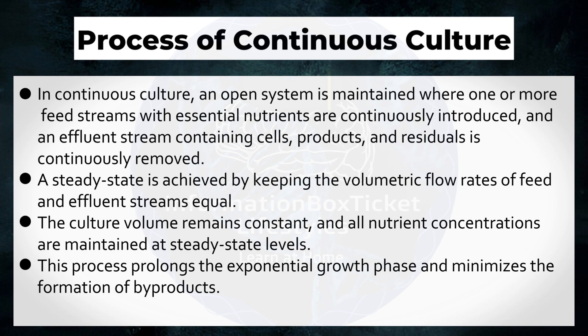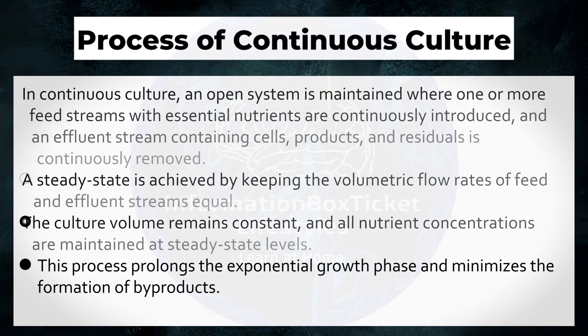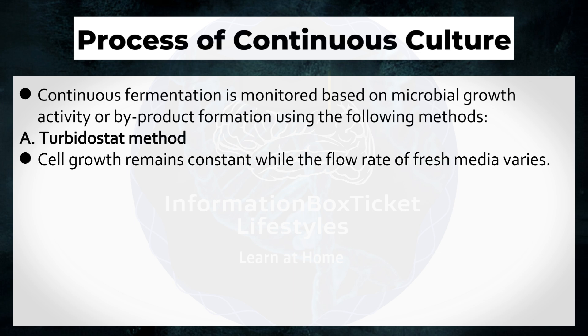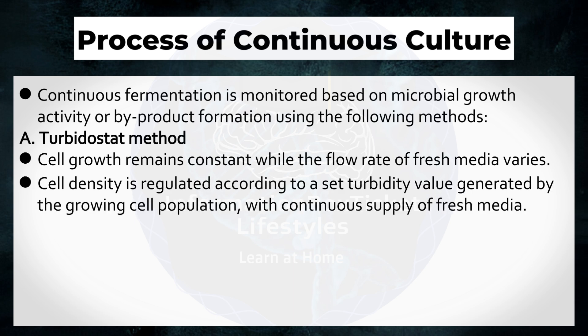This process prolongs the exponential growth phase and minimizes the formation of byproducts. Continuous fermentation is monitored based on microbial growth activity or byproduct formation using the following methods. Turbidostat Method: Cell growth remains constant while the flow rate of fresh media varies. Cell density is regulated according to a set turbidity value, generated by the growing cell population, with continuous supply of fresh media.